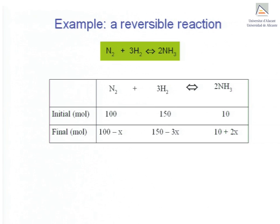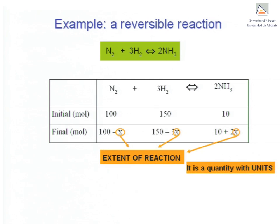Of nitrogen there will remain the initial 100 moles minus 1 times the amount denoted by X which has reacted. Of hydrogen, the other reactant, there will remain 150 moles minus 3 times the same amount X. Of ammonia, the product of the reaction, new molecules will be formed, so the 10 moles of ammonia initially present increases by twice the amount X. X is just the extent of reaction and is a numerical quantity with units; in this case X is measured in moles.